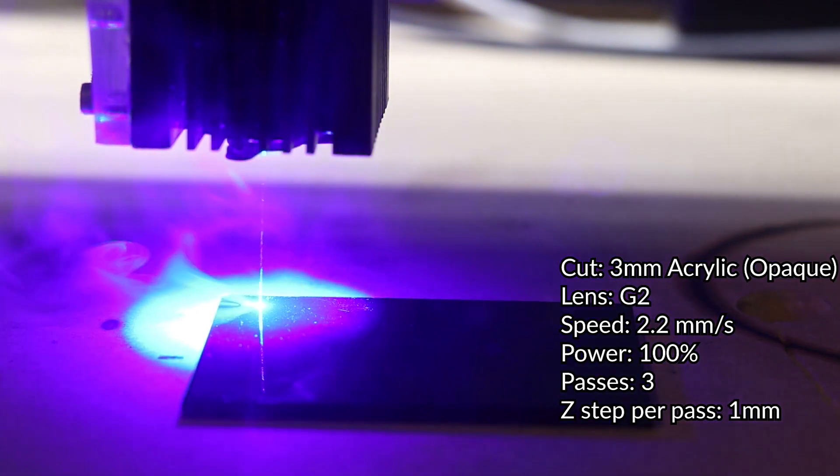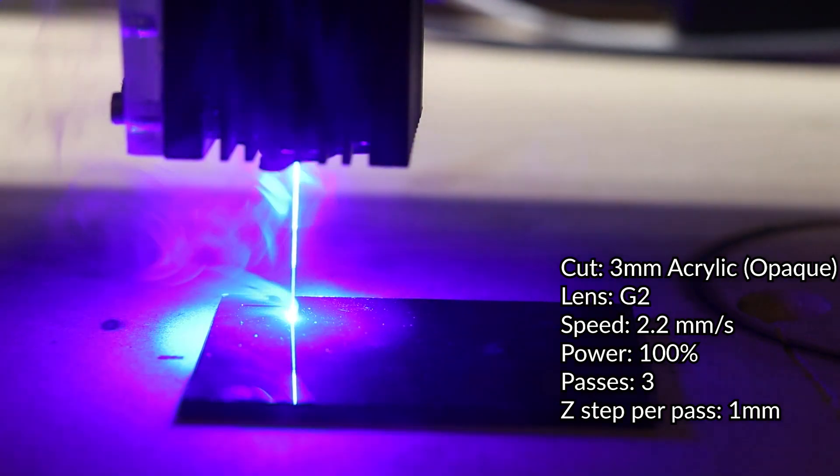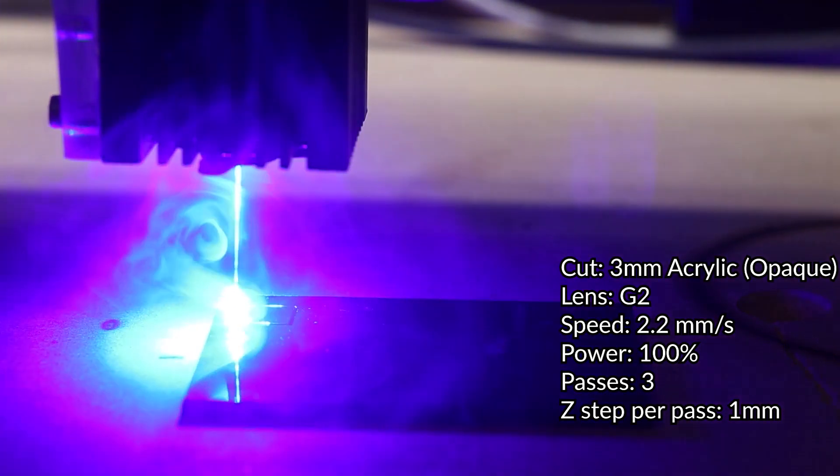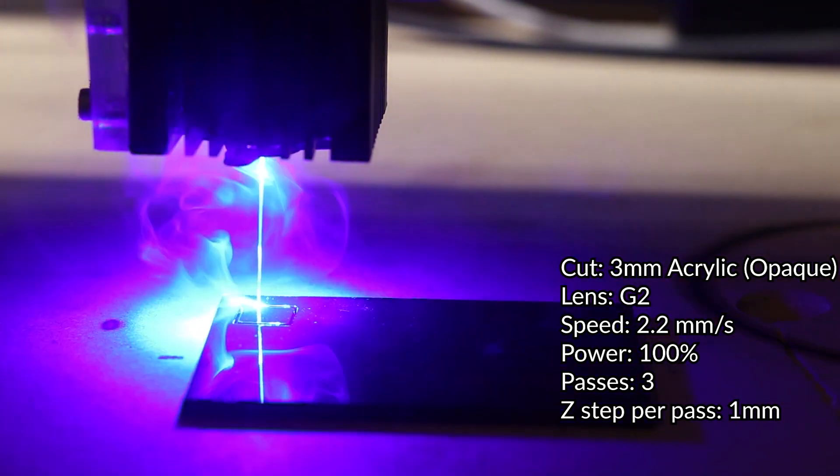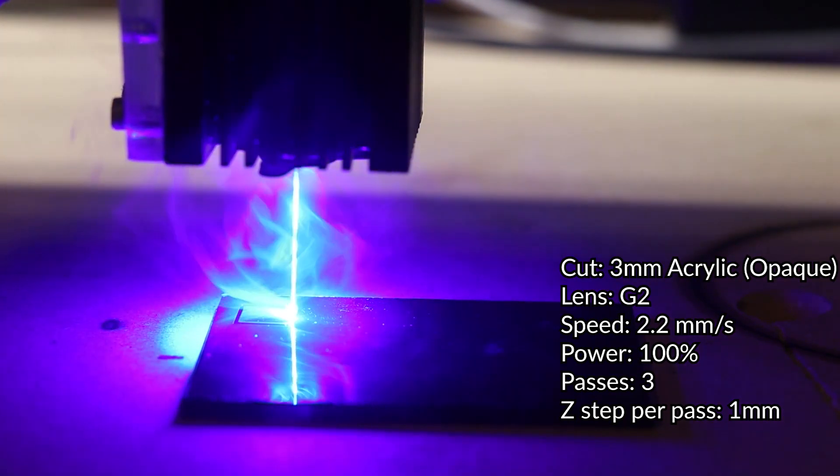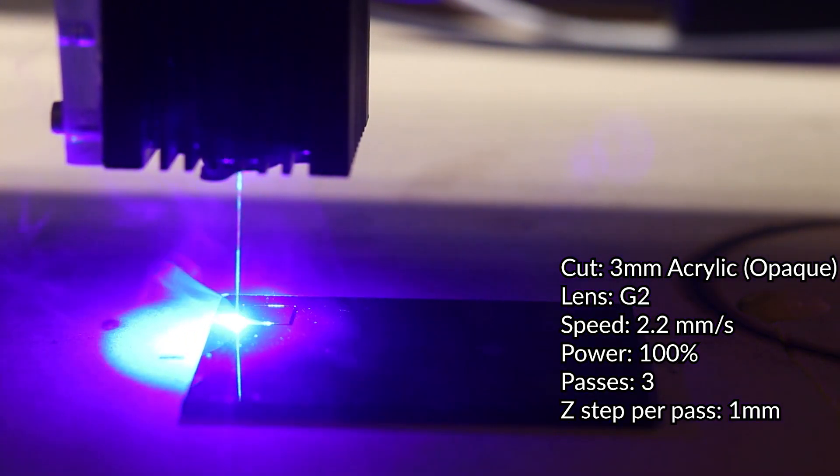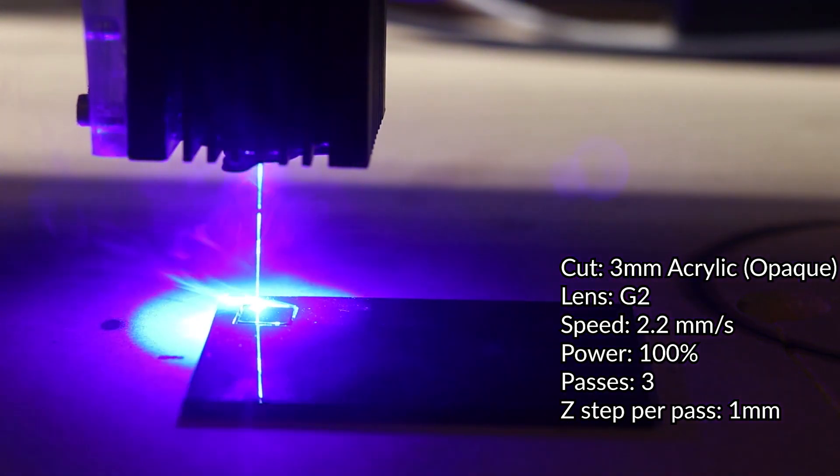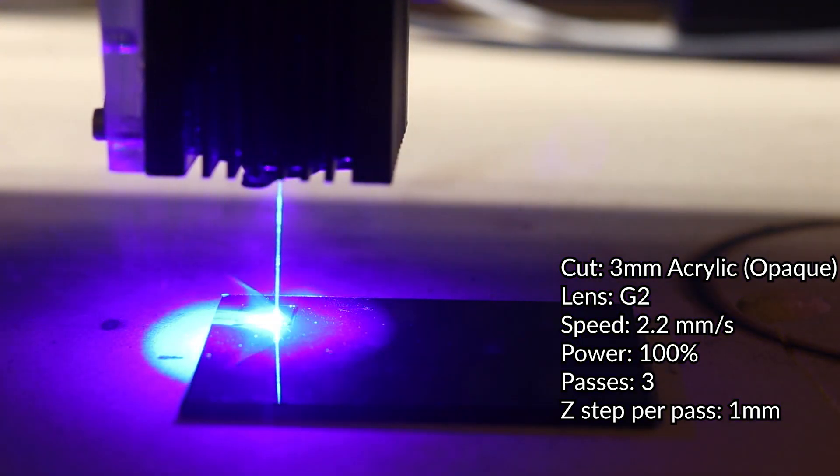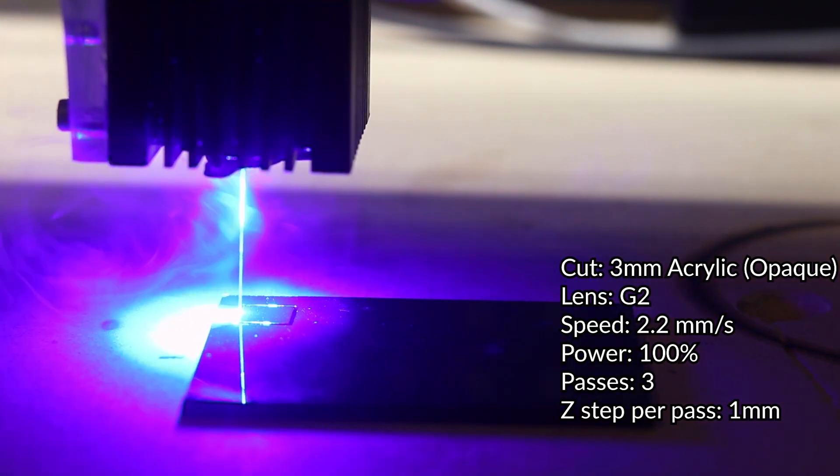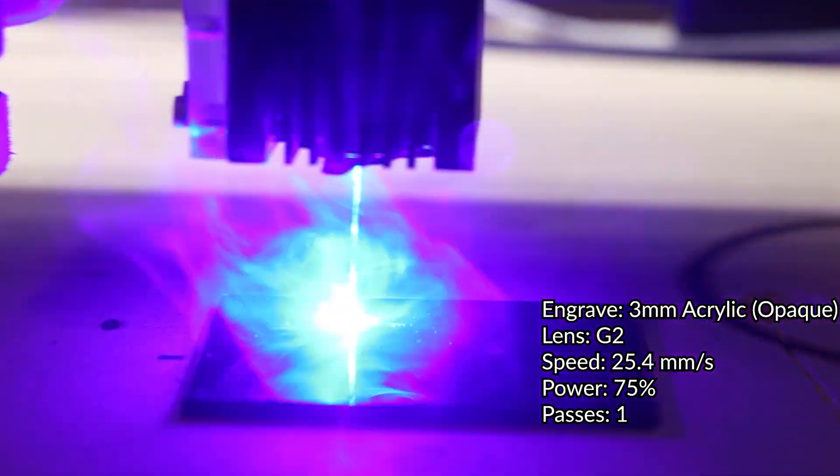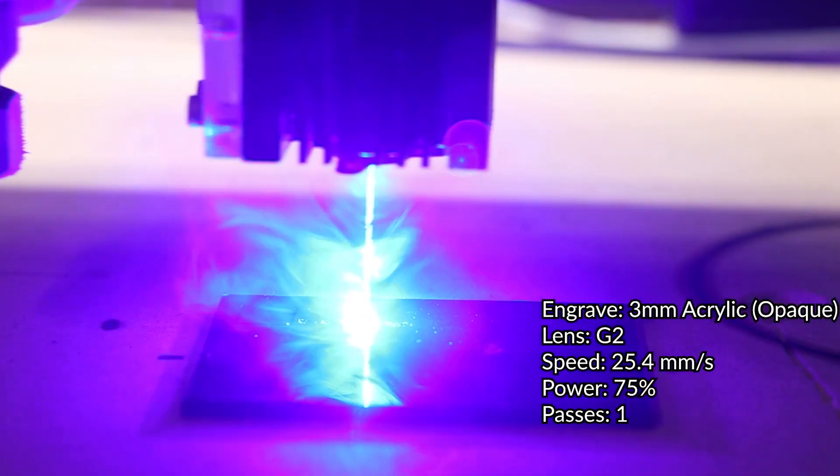So one thing you need to know about acrylic is that you can only cut opaque acrylic with this laser. Any type of clear or semi-transparent acrylic, the laser beam will shine right through it, bounce off your waste material, and end up engraving the bottom of your acrylic. So opaque acrylic only, and with opaque acrylic you can get really good results.